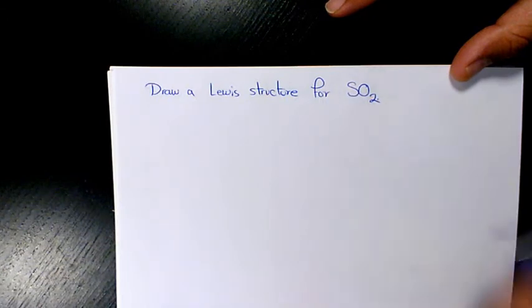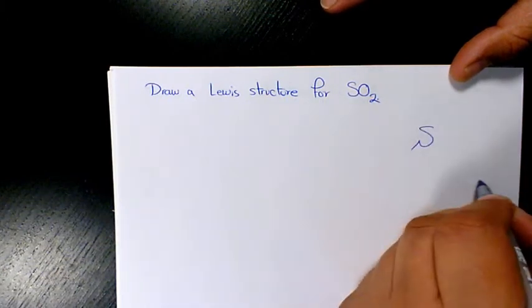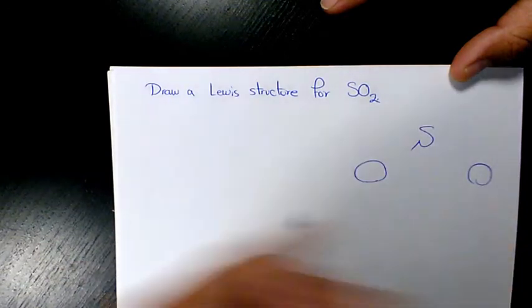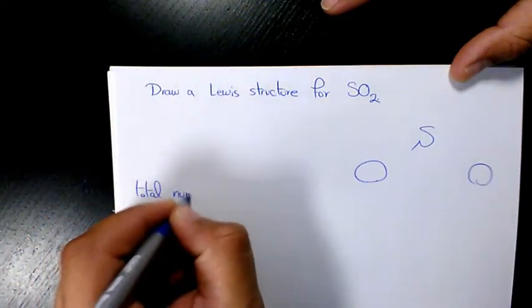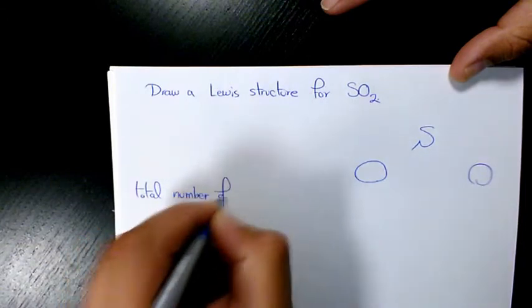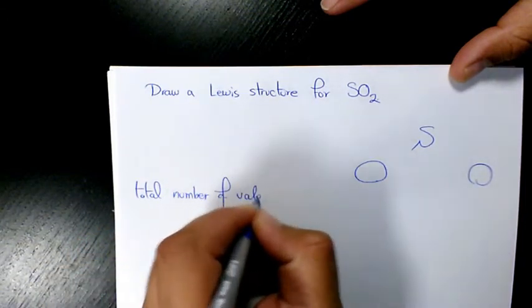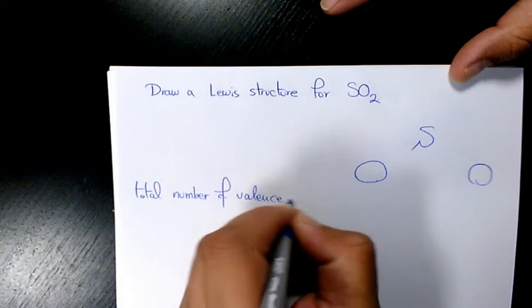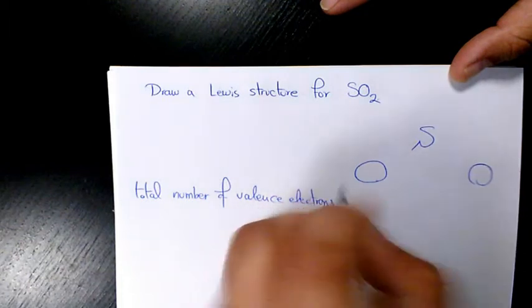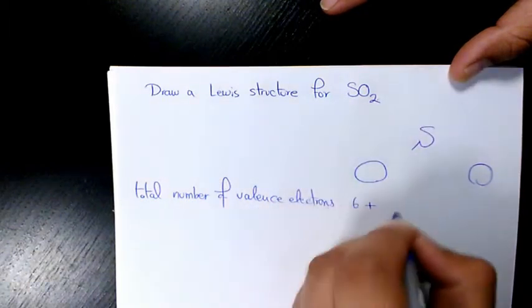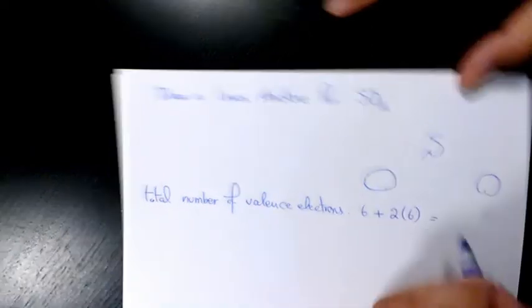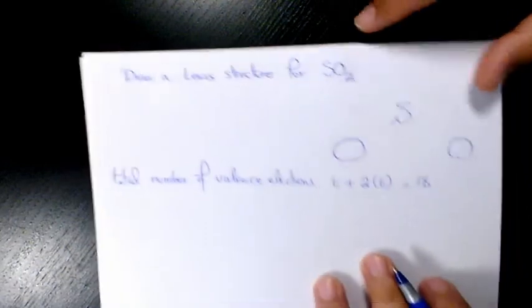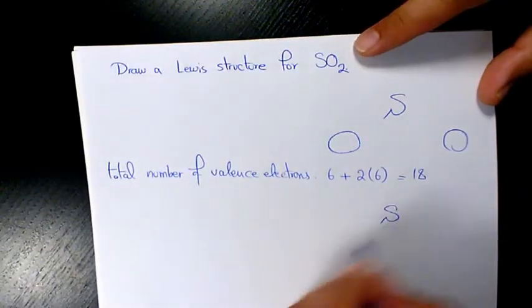Then what we need to do is find the total number of valence electrons, which is going to be 6 for sulfur and 2 times 6 for oxygen, so that's going to be 18 electrons.